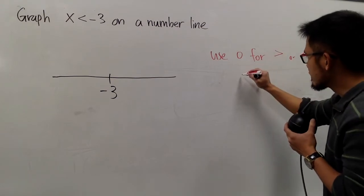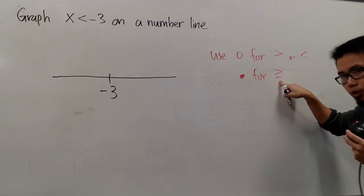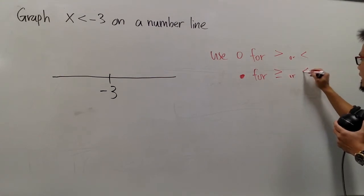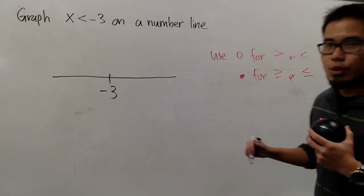And on the contrary, we use closed circle when we have greater than or equal to, or less than or equal to. So be sure you remember the symbols that we are going to use.